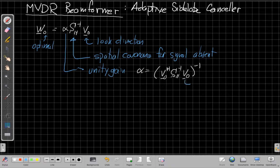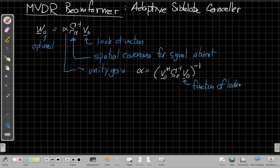And then this alpha, this is just the unity gain part, right? This is just a scalar value. Alpha is v-naught Hermitian Sn inverse v-naught in the denominator.